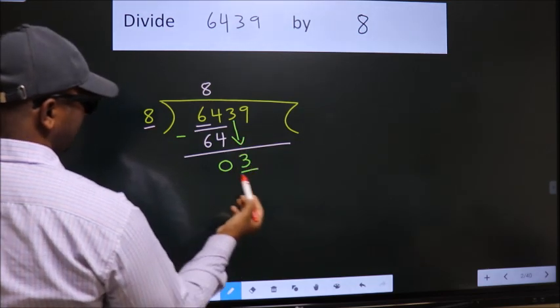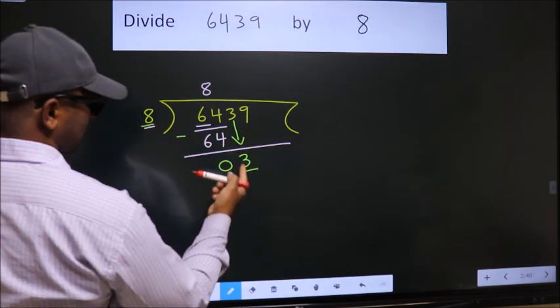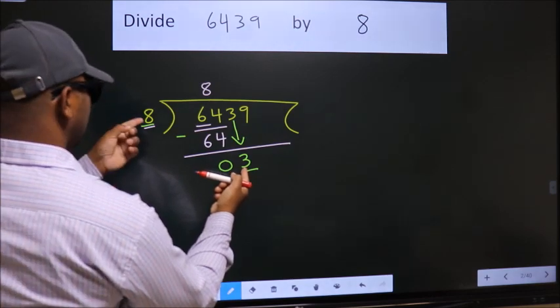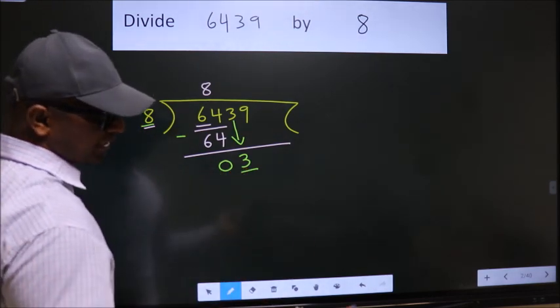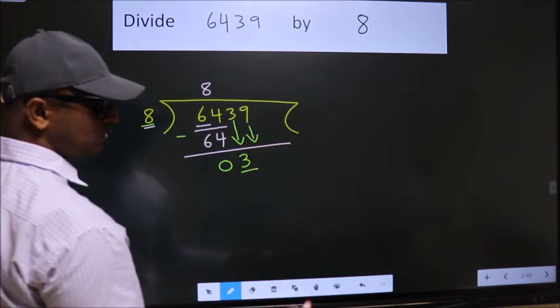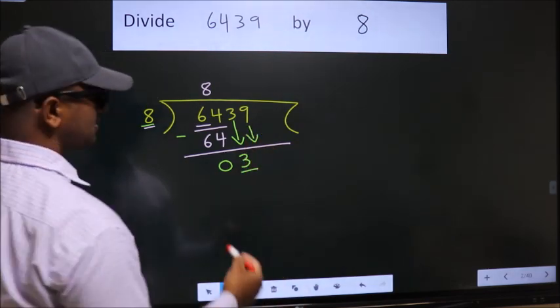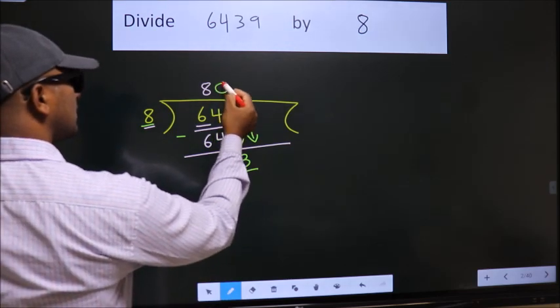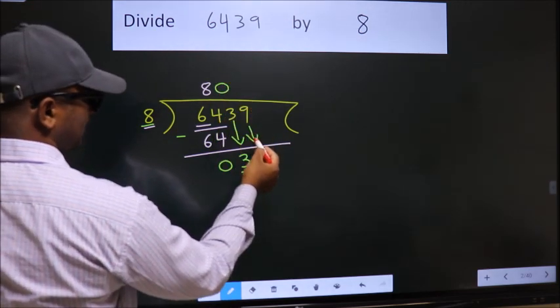Here we have 3, here 8. 3 is smaller than 8, so we should bring down the second number. And the rule to bring down second number is put 0 here. Then only we can bring down this number.